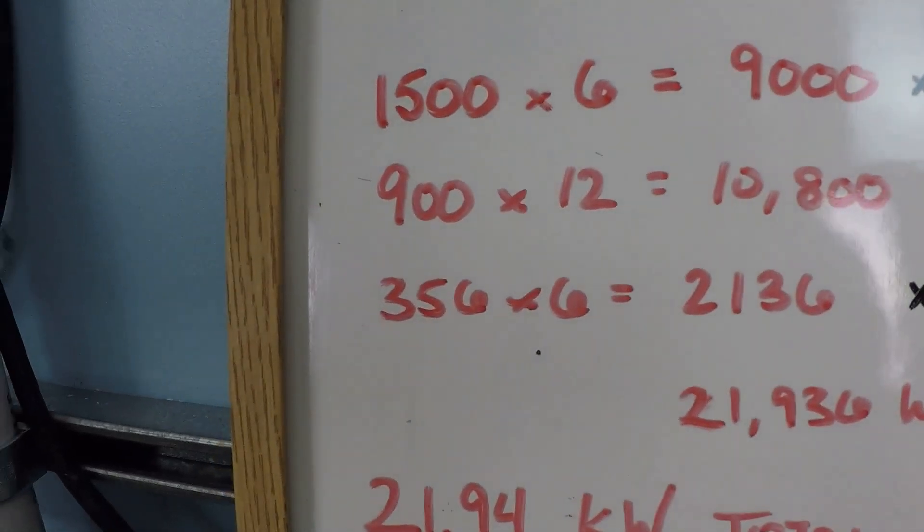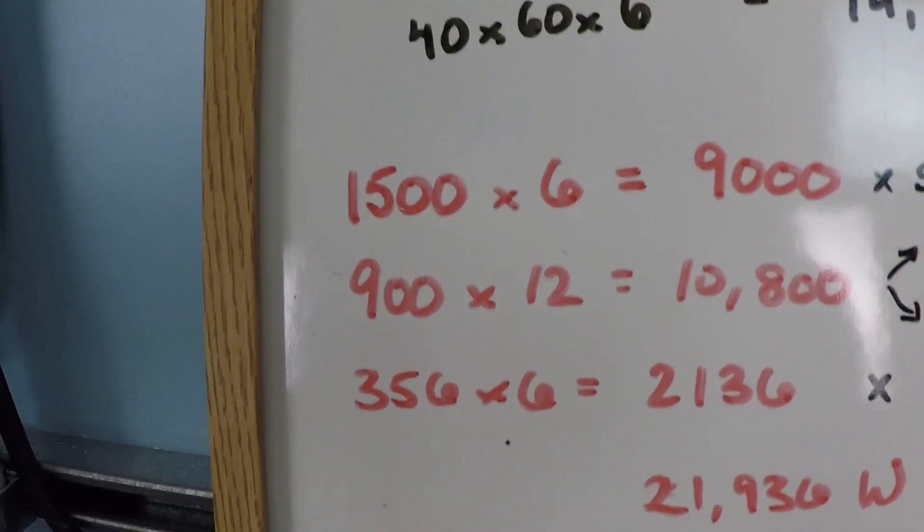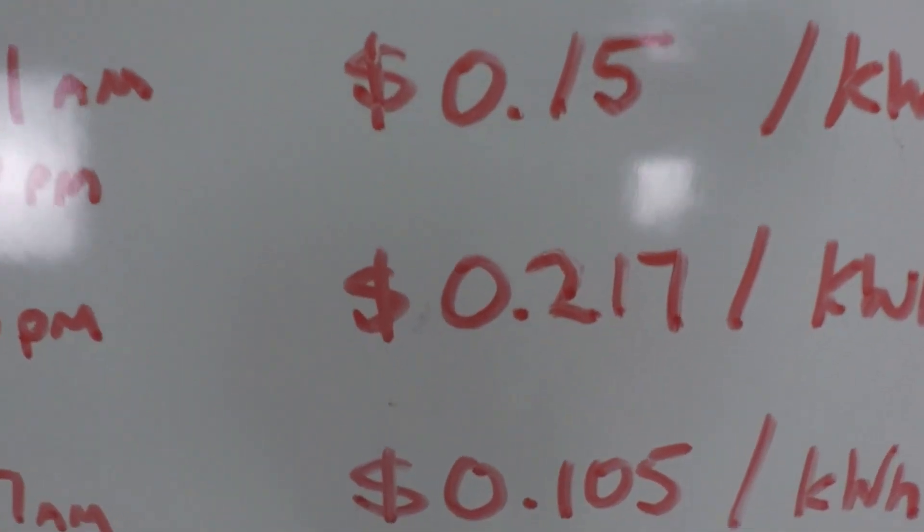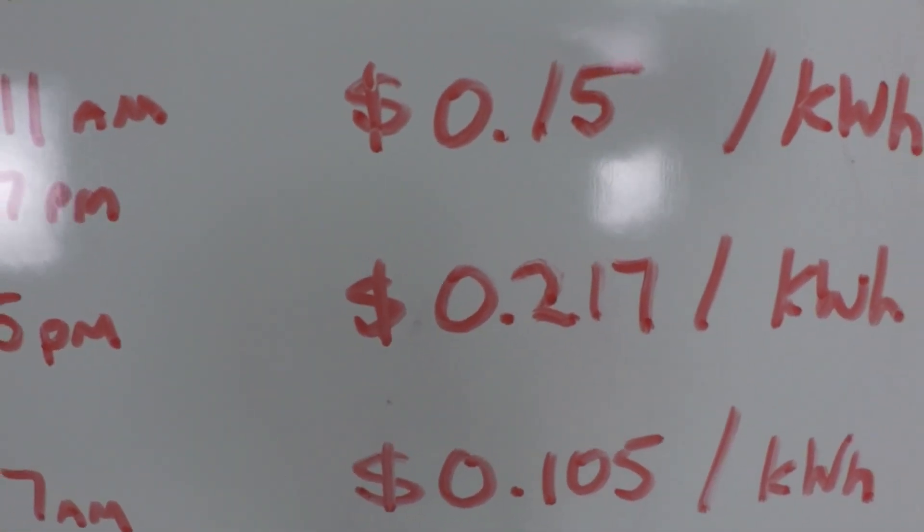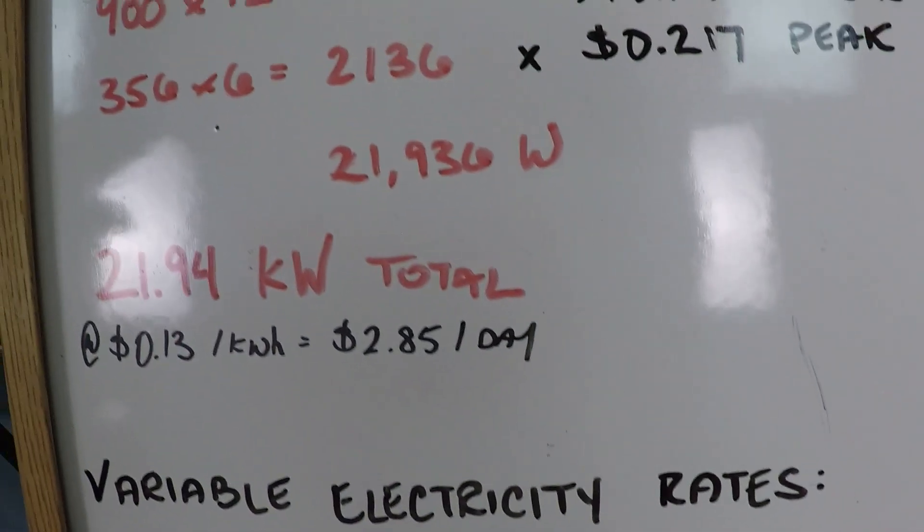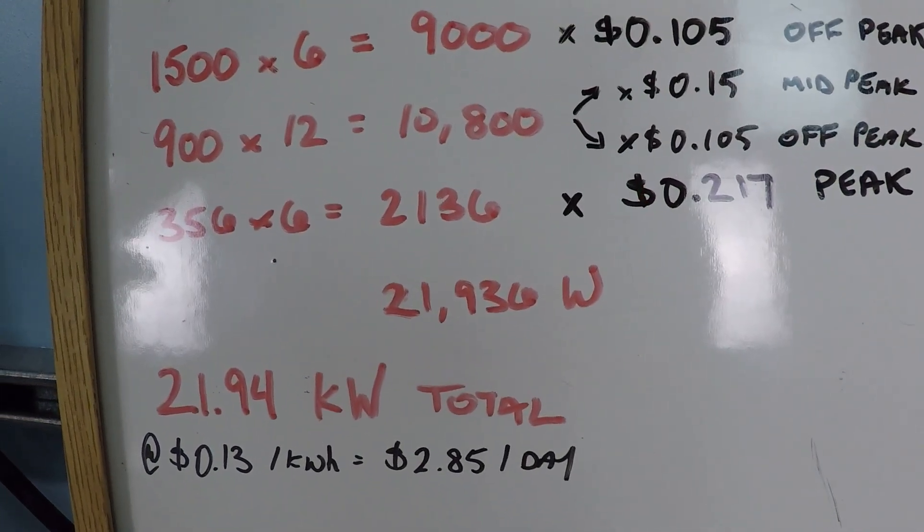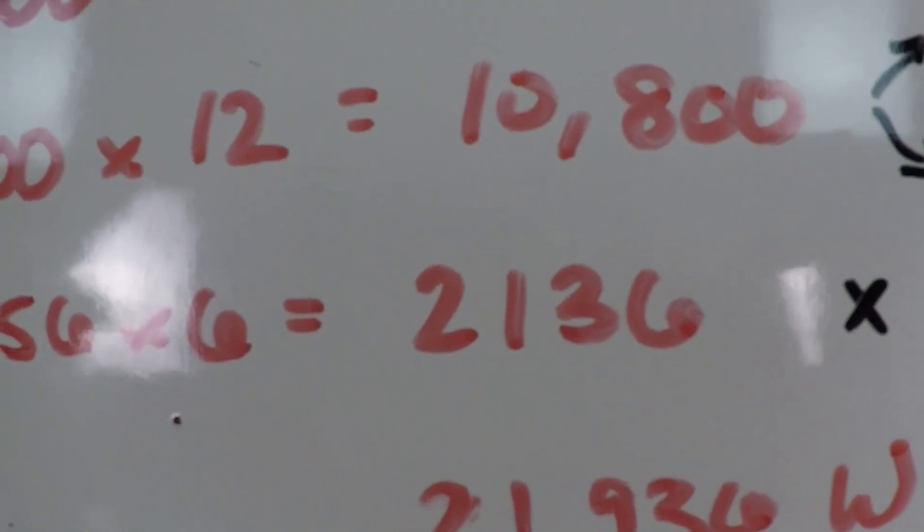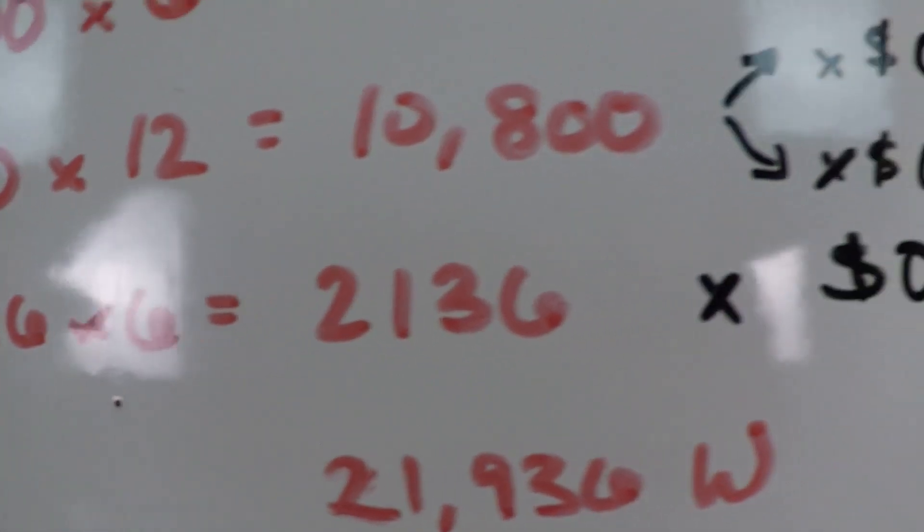What we did is we started with something like the highest cost, the 21.7 cents per kilowatt hour. Well, when you're paying the most for the power you want to use the least amount of power, and so that's what we did here.